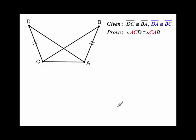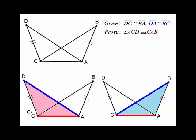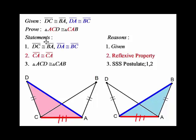We're going to start with this example where we have two overlapping triangles, and we're supposed to prove that triangle ACD is congruent to triangle CAB — the pink triangle is congruent to the blue triangle. The proof uses the given that CD is congruent to BA, and the whole line segment DA is congruent to BC.